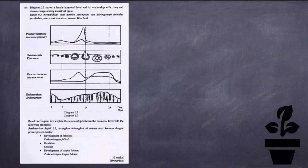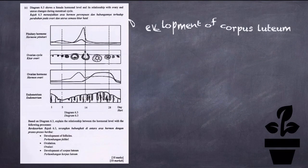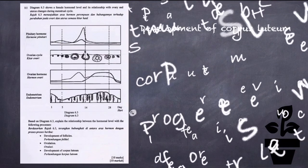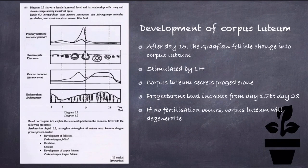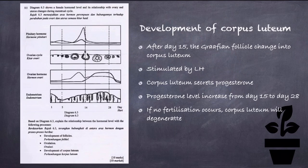Last but not least, the third process is the development of corpus luteum. After day 15, the Graafian follicle changes into the corpus luteum, stimulated by luteinizing hormone, LH. The corpus luteum starts to secrete progesterone. The progesterone level increases from day 15 to day 28. If fertilization does not occur, the corpus luteum will degenerate.